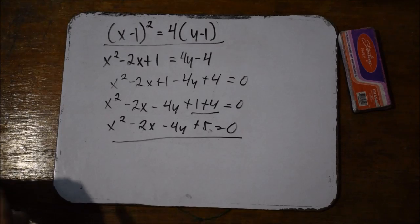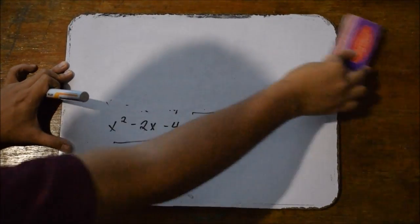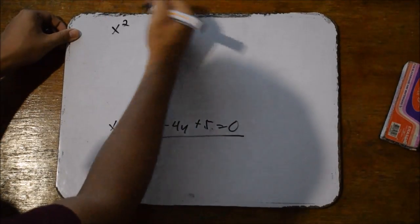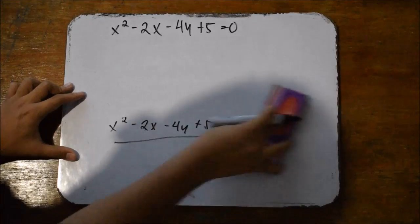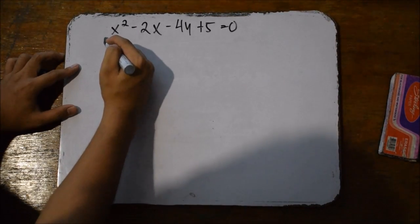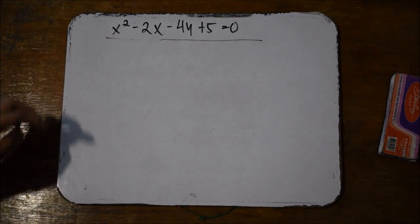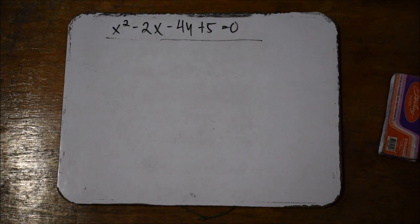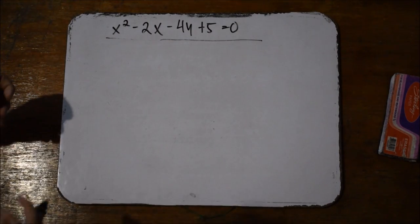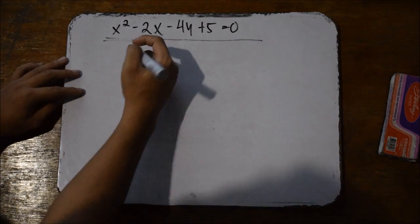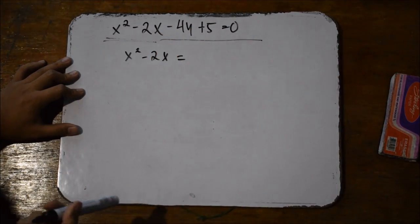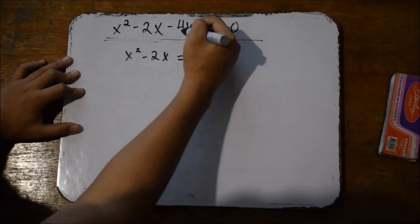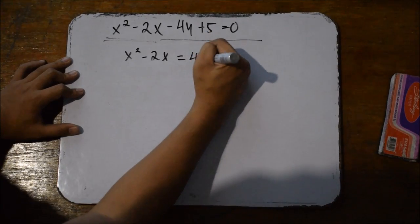So we're going to do it vice versa. What if our given is x squared minus 2x minus 4y plus 5 is equal to 0? We all know that it is a parabola in the general form, and we need to transform it into the standard form. The first step is separation of variables — we need to separate the x's from the y's. So x squared minus 2x is equal to — applying the addition principle of equality again, altering the signs — 4y minus 5.